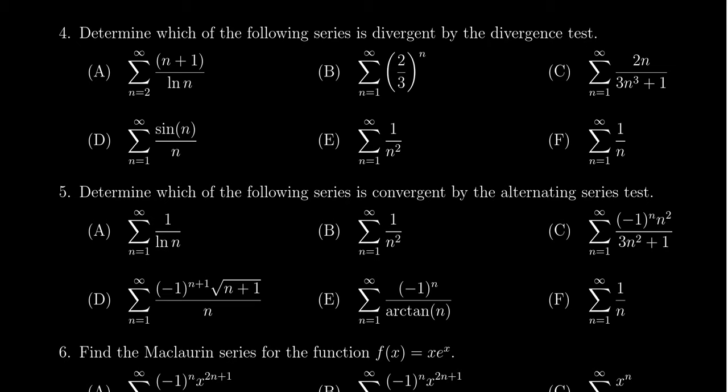If we look at the first one, A, we have n plus 1 over the natural log of n. That kind of looks hard. I'm going to go to the next one. We just have to find the right one that's divergent by the divergence test. Now be careful here. There might be more than one series that's divergent, but we have to find the ones that are divergent by the divergence test.